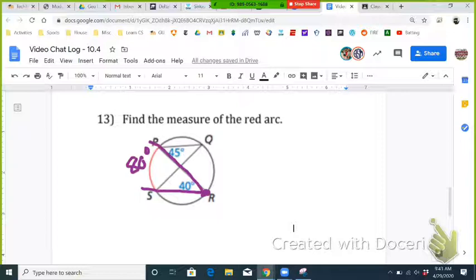Now someone asked, why is it 80? Can't it be 95? Because wouldn't this angle, since this arc would be 90, this angle is also inscribed in that arc.